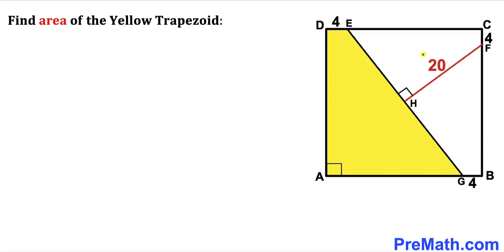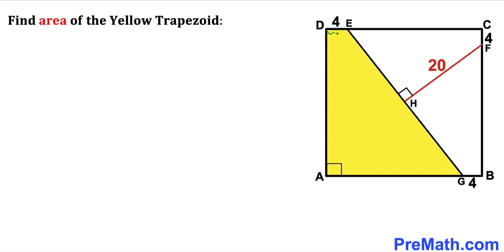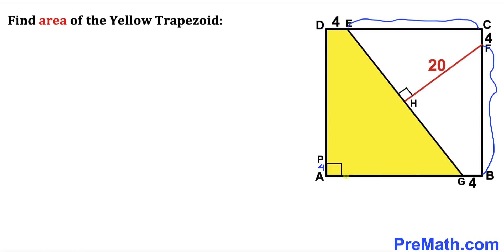Let's make an observation. We are dealing with square ABCD, so all side lengths are equal. Of these, segment DE is 4, likewise CF is 4, and GB is 4 as well. Now let's assume there is a point P on side AD such that DP is 4 units as well. Therefore we conclude that segments EC, FB, AG, and DP are congruent. If this side length is X units, then EC, FB, and AG are X units as well.